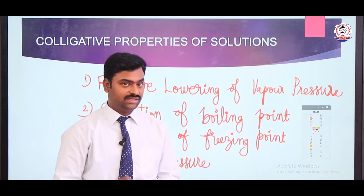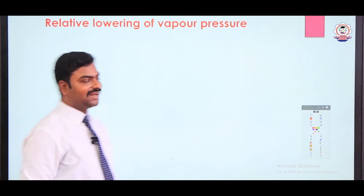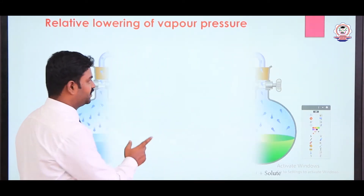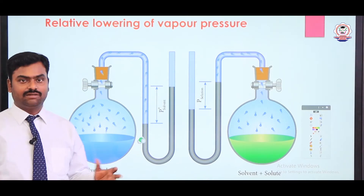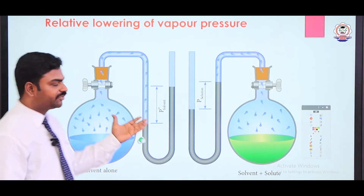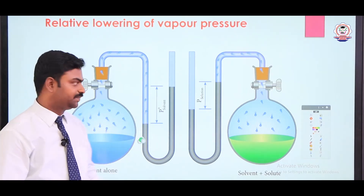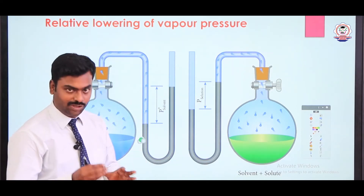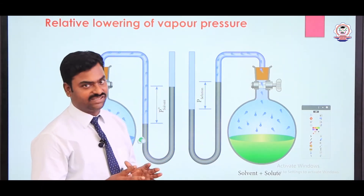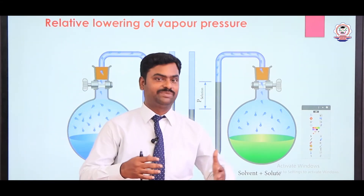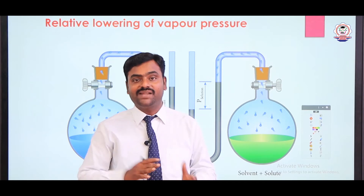We will discuss one by one. In this video we are going to discuss relative lowering of vapour pressure and then elevation of boiling point. What is relative lowering of vapour pressure? When we have a pure solvent, the pure solvent exerts more vapour, so the amount of vapour is more, and the pressure is higher — this is called P₀. When you dissolve some solute molecules in the solvent, the amount of vapour created will be decreased, so the pressure also decreases. This is what we are calling relative lowering of vapour pressure.